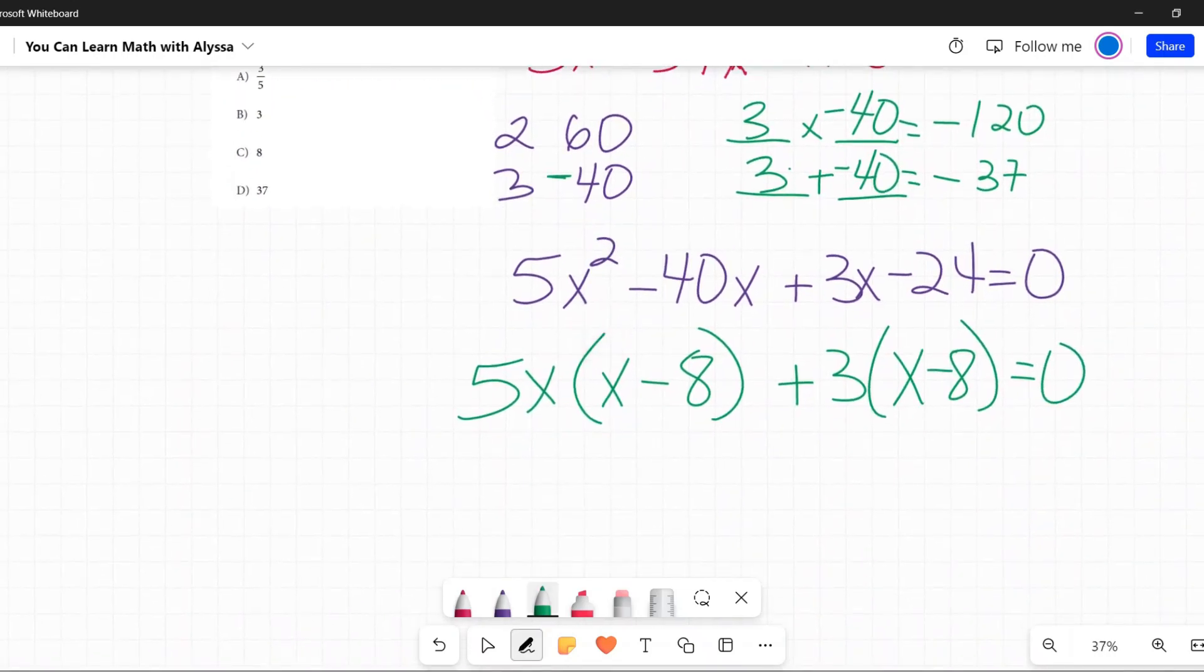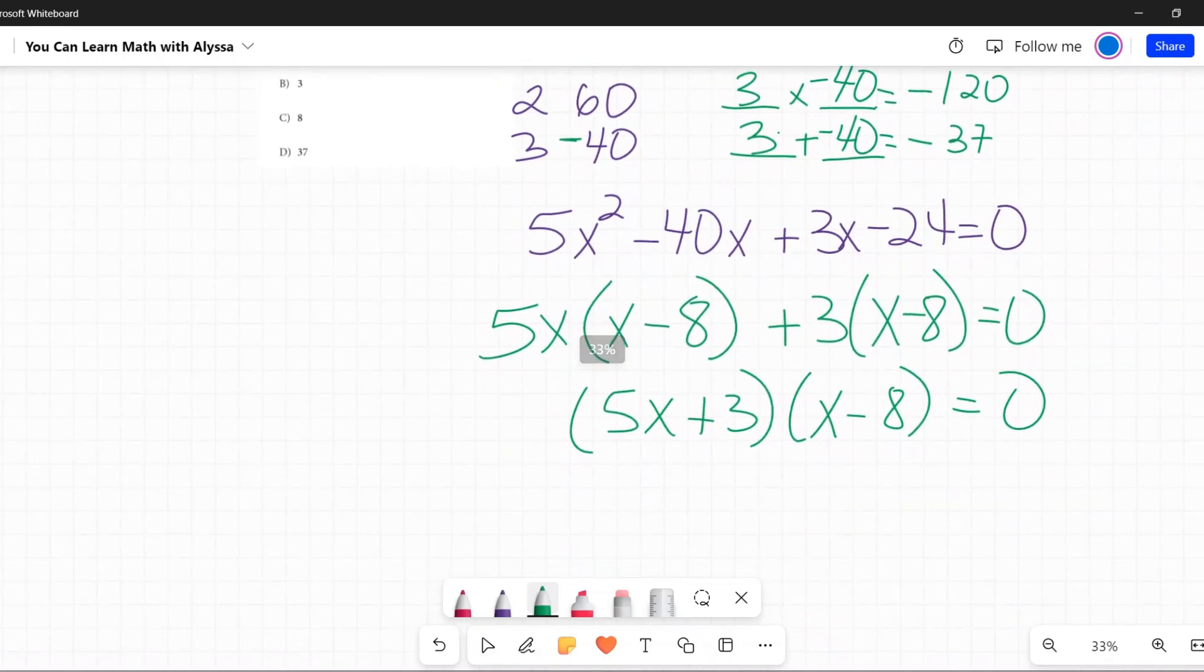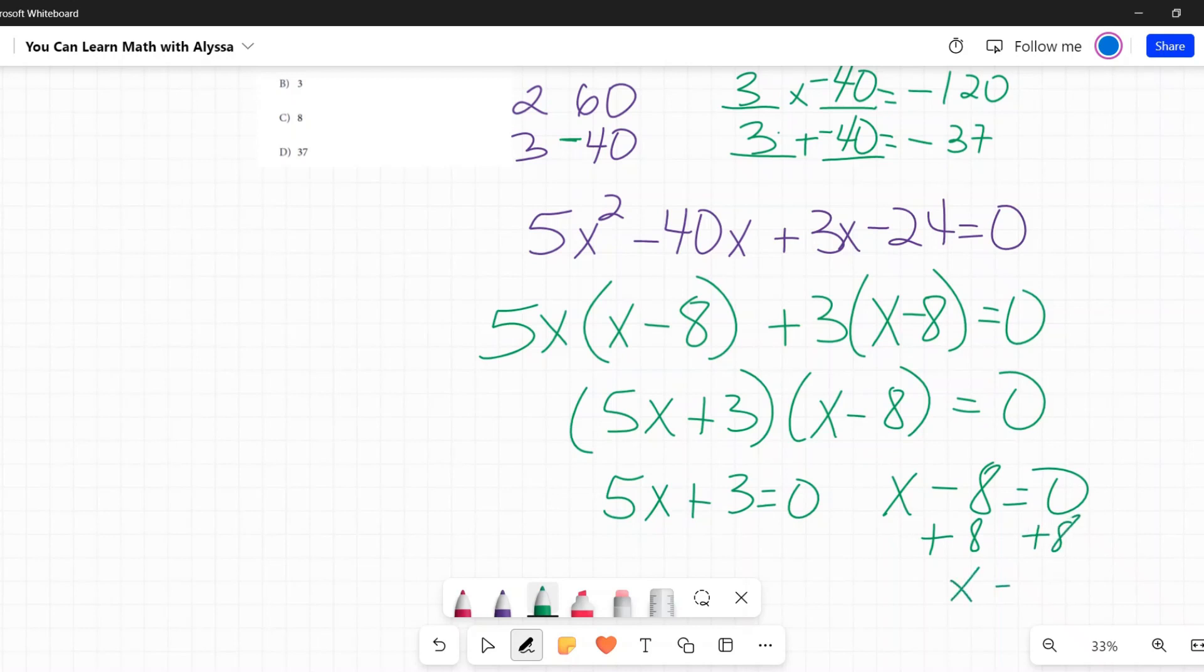So I have fully factored this. It is 5x plus 3 times x minus 8. And then if I solve both of those separately, say 5x plus 3 equals 0 and x minus 8 equals 0. Well, just long experience tells me this is going to be the one with the positive answer. So I'm going to add 8 to both sides and get that x equals 8. So that is my answer.